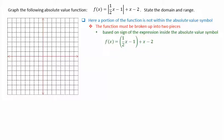In one case, we'll use f of x equals 1 half x minus 1 plus x minus 2. Note here we're simply removing the absolute value symbols. This piece will correspond to if what is inside the absolute value symbol is greater than or equal to 0.